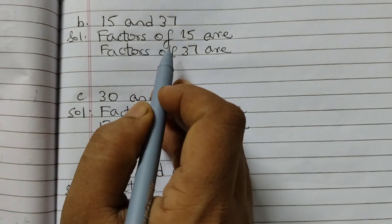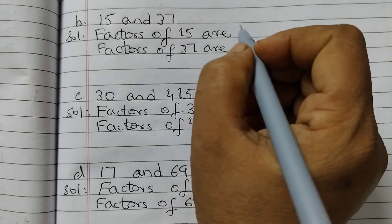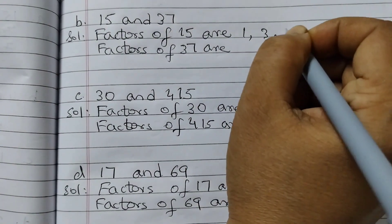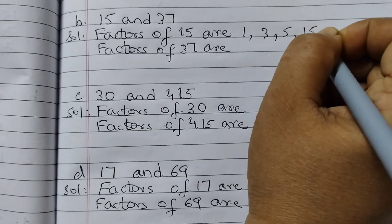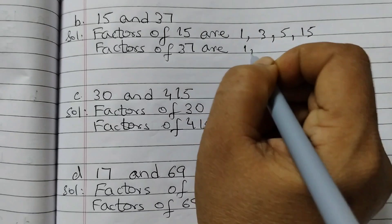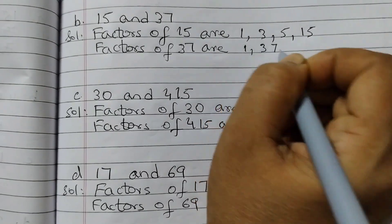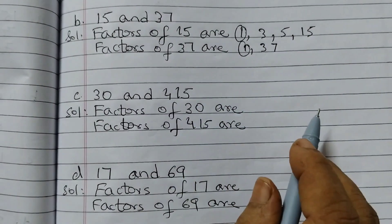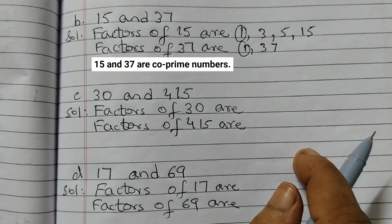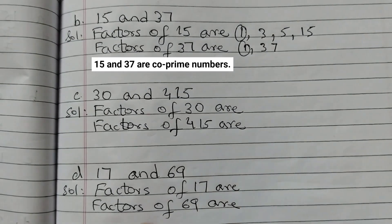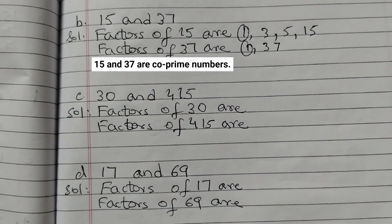Next one, 15 and 37. First find out the factors. Factors of 15 are 1, 3, 5 — 3 fives are 15 — and 15 itself. So 4 factors we have. 37 is a prime number, so we have only 2 factors: 1 and 37. Now we will see the common factors. 1 — are there any more? No. That means 15 and 37 are co-prime numbers.